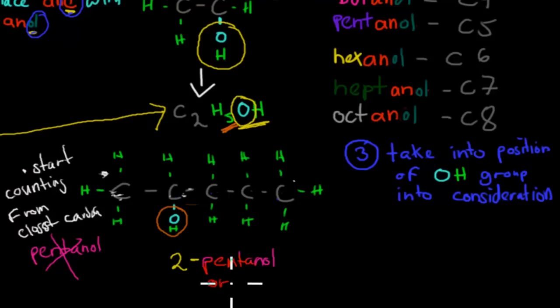Is pent-an, so pent-an, and before you write the OL, you write 2-OL, so these are two ways you can write the same thing.